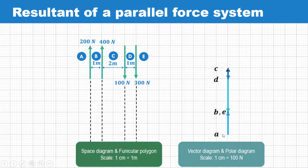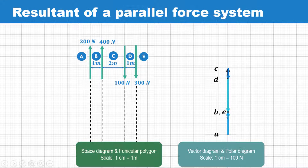Our starting point is A and our ending point is E. From A to E we are going in the upward direction, so the resultant will be acting in the upward direction. Its magnitude is given by the length AE, which is 2 centimeters multiplied by the scale of 100 Newton.